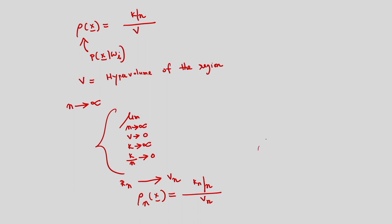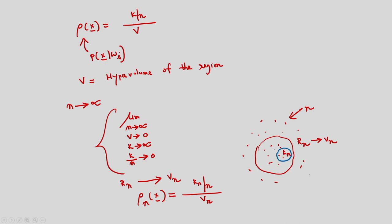So within region R_n we have k_n samples available, the total number of samples is n, and V_n is the volume corresponding to region R_n. From this we can determine the nth estimate of the density: k_n divided by n, divided by V_n.